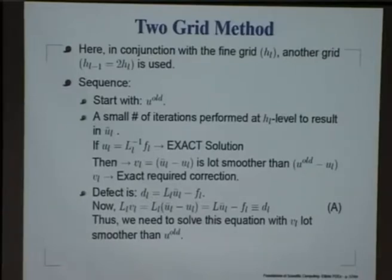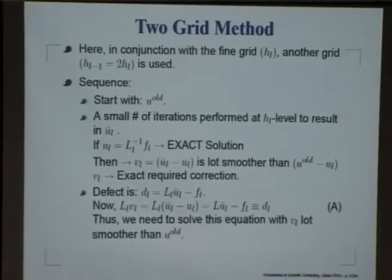The difference between the two is the exact correction that is required. The exact correction is governed by this equation: L_L into V_L. Instead of V_L I put the definition down here as U bar minus U, and that would give me the defect back. Essentially, to obtain the exact correction we have to solve the same problem, but now the right hand side is replaced by the defect at that level. That is what the right hand side of equation A indicates - that the correction is driven by the defect at that level.